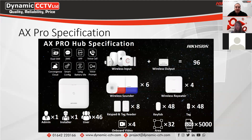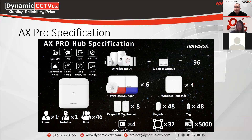With the AX Pro hub specifications, there is a limitation on the number of different devices you can add within the system, which is displayed on the slide. All of the hubs come with battery backup if there is a power loss. If there is power loss on the site, as long as you've got a 4G SIM card installed, you would still get notifications through because the hub would still be online. All sensors and wireless sounders also have their own inbuilt batteries. The external sounder can also be hardwired to mains power if needed.